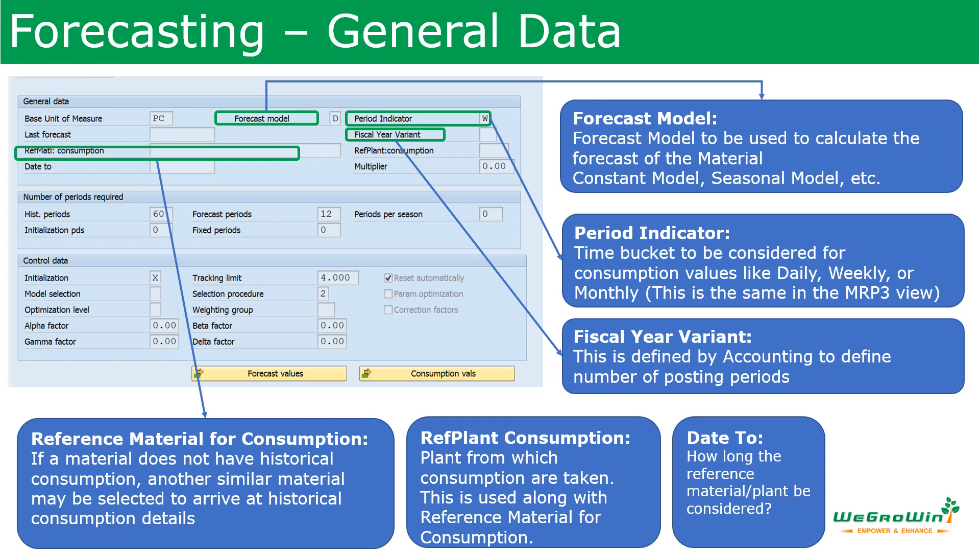If one material does not have any historical data to create the forecast, we can define a similar material as a reference material for consumption details. The system will then consider that reference material's past details to calculate the forecast. We can also enter the reference plant and how many periods to use that reference material. For example, if material A uses material B as reference, after six months material A itself may have sufficient history, so we can stop using the reference at that point.